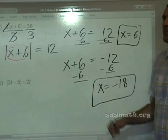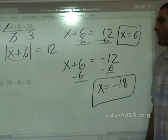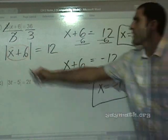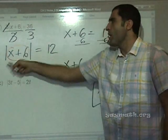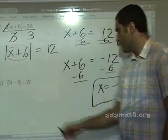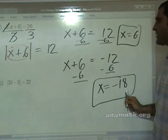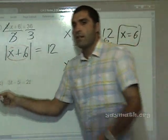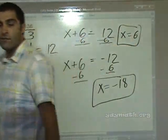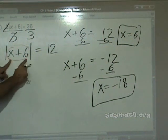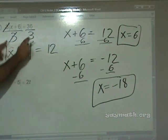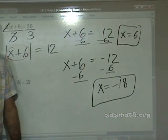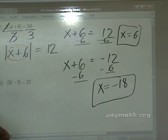We can plug in both to verify. 6 plus 6 is 12; absolute value of 12 is 12 — that checks out. Negative 18 plus 6 is negative 12; absolute value of negative 12 is 12. So that works as well.